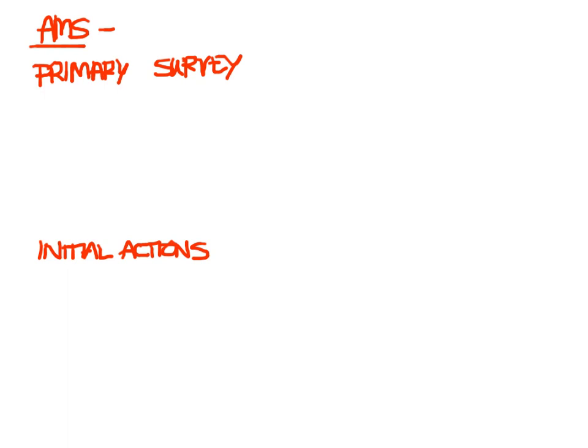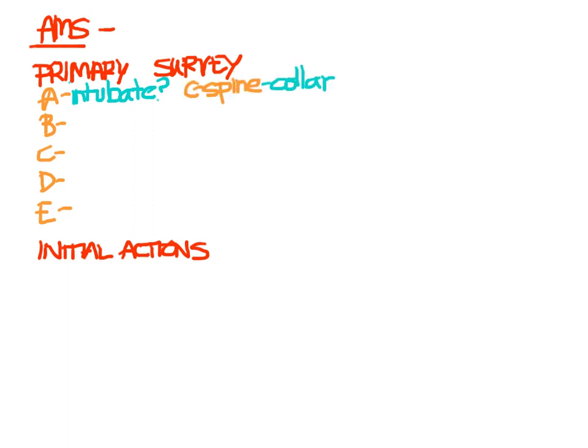The first thing in your evaluation of the patient with altered mental status is to perform your primary survey and initial actions, going with ABCDE like we did for trauma. One of the most common causes of death from altered mental status is loss of airway protective reflexes — the patient will aspirate because they're so out of it. Intubate these patients if needed. Always think about C-spine immobilization in case trauma is a cause, and supplement breathing with 100% oxygen by mask in the delirious patient or an endotracheal tube in the comatose patient.